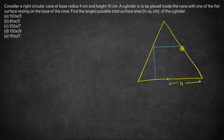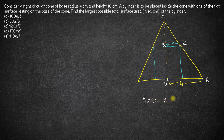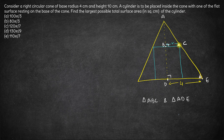Let's take this as the cylinder, and we have this as the altitude of both the cylinder as well as the cone. Now, assuming that the radius of the cylinder is R, let me name a few points: A, B, C, D, and E. If you look at triangles ABC and triangle ADE, both of these triangles will be similar triangles because this angle is 90 degrees in both triangles and this is the common angle, since this line is parallel to this line.